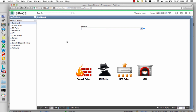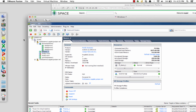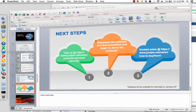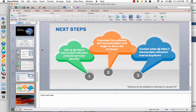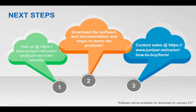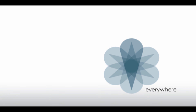That's it for the demo. I just want to remind folks that you can download Space, Security Director, Virtual Director, and all the Firefly pieces. You can see all the Firefly items at Juniper.net/Firefly — it has links to Host, Perimeter, and Virtual Director. Thanks for watching the video.